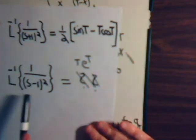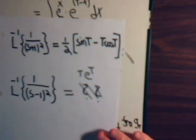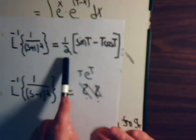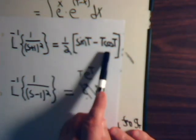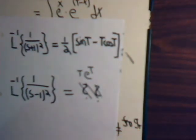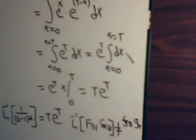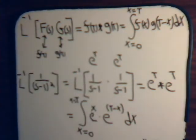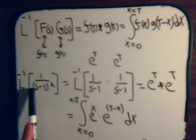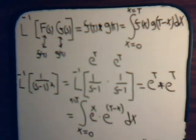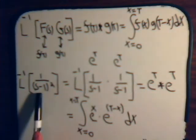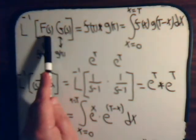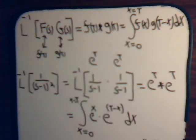When we had 1 over s plus 1 squared, as we figured out in the previous video in example number three, it's one half sine of t minus t times the cosine of t. So there are four examples so far as to how we can use the convolution to evaluate the inverse Laplace transform. The trick is to be able to write the expression as a product of two individual Laplace transform functions, as we saw in the previous videos.